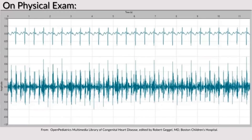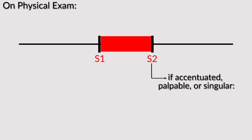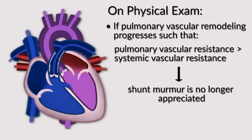On physical exam, you'll hear a pansystolic murmur as blood is shunted across the ventricular septum. The murmur begins right after S1 and may be slightly delayed if it's a muscular defect with some constriction. The S2 is very important to characterize — if it is accentuated, palpable, or singular, these findings denote an increasing degree of pulmonary hypertension. If pulmonary vascular resistance exceeds systemic vascular resistance, the shunt murmur will no longer be appreciated, and those patients are categorized as having Eisenmenger complex.